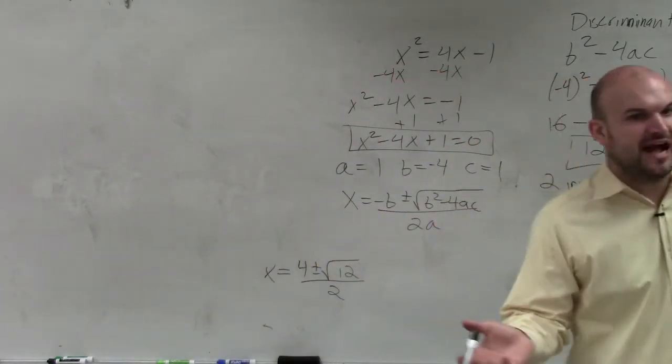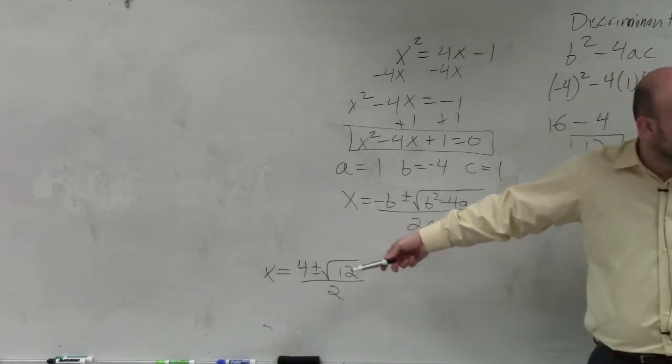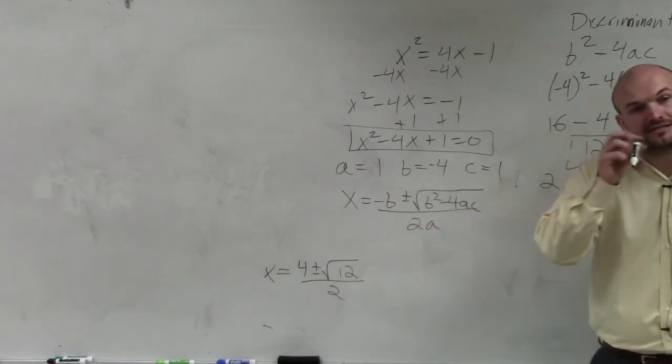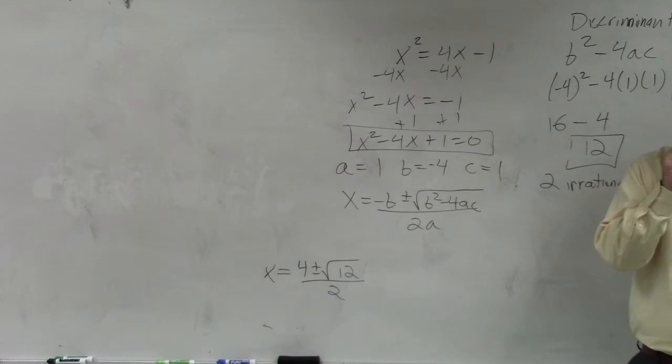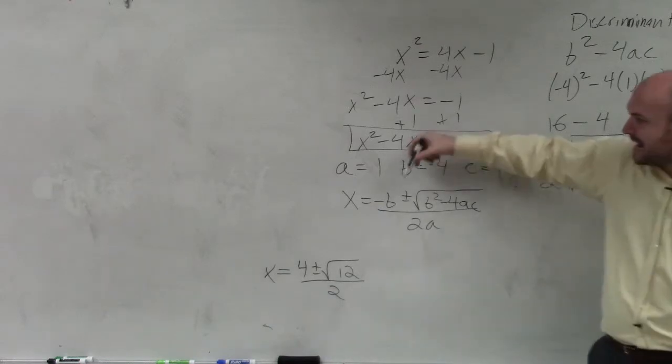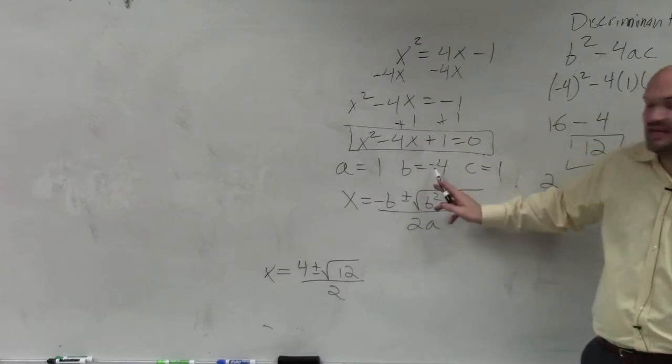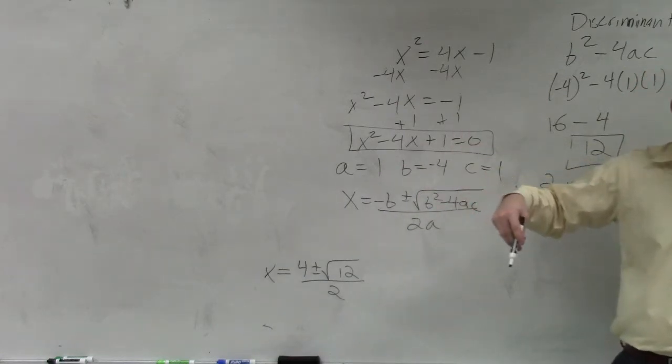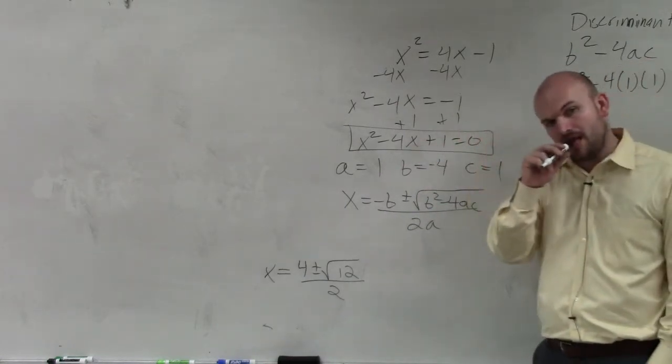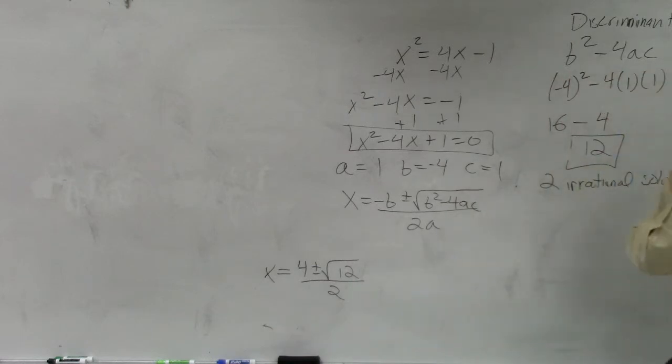So you guys see why it's irrational? Because can you take the square root of 12? No. You can't take the square root of 12. Hey, why did we keep it negative 4? Because it's opposite of B. Oh. So B is negative, so the opposite sign of negative 4 would be positive 4. So if it was a positive 4, then you have to do a negative 4. Correct.